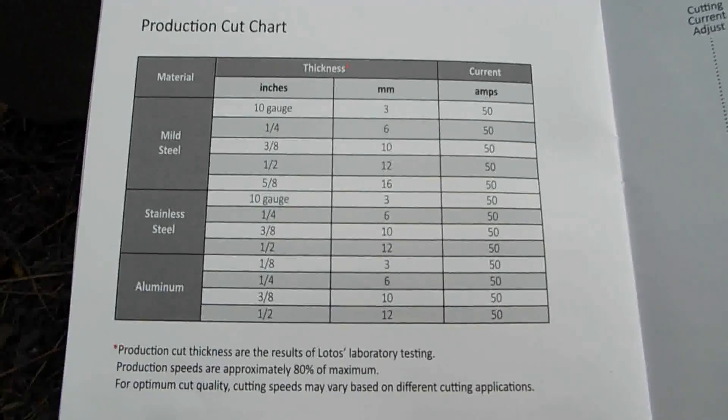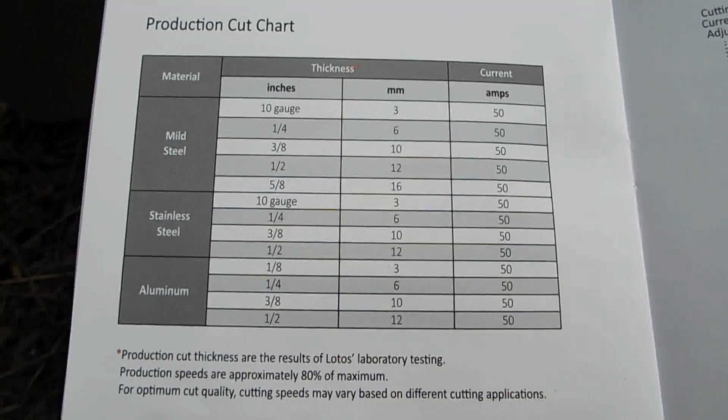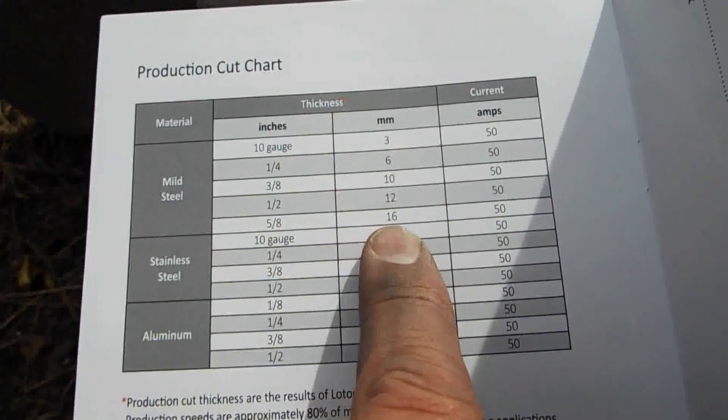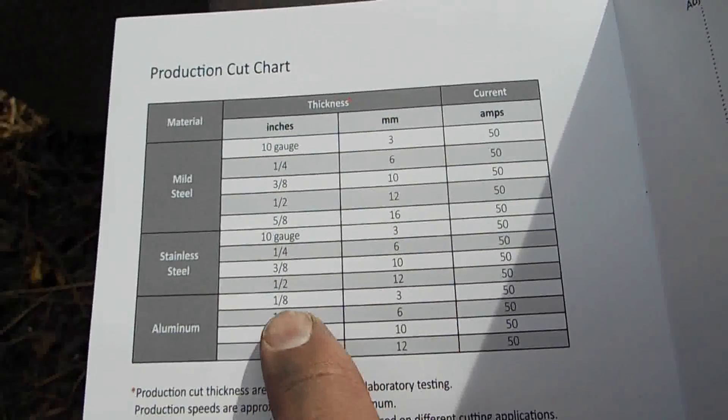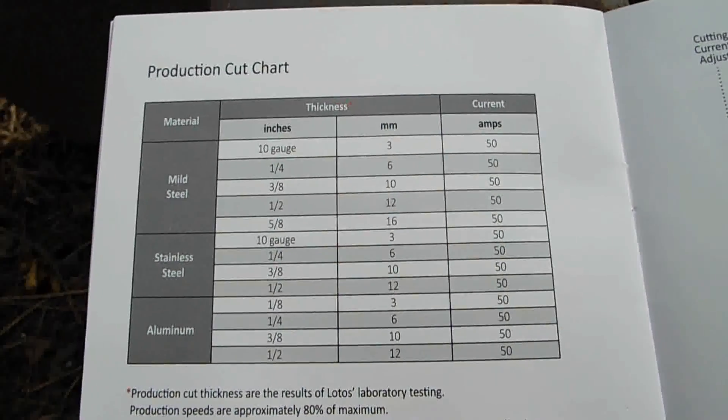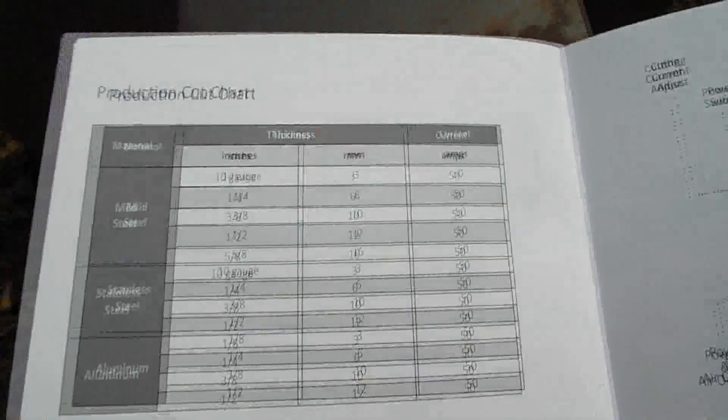So, when I bought this I thought it would only do a quarter inch plate but the manual seems to suggest that it will do five-eighths inch mild steel. And it will do half inch stainless steel and half inch aluminum. So, I'm going to give it a shot here. I've got a piece of half inch mild steel plate. This piece here. And we're going to try and cut this one. Let's see how it works.